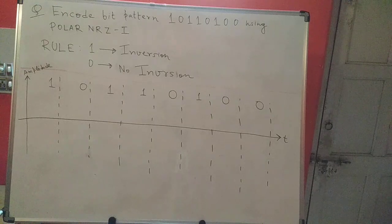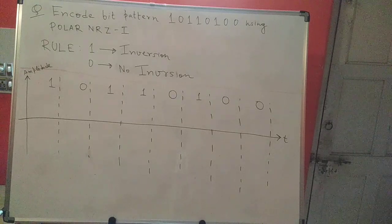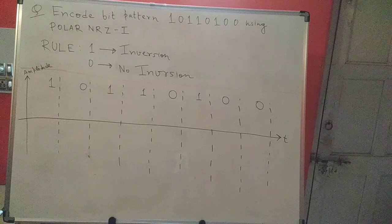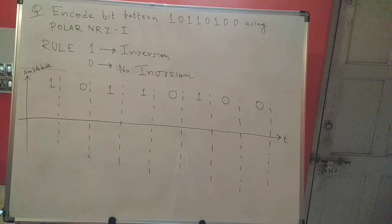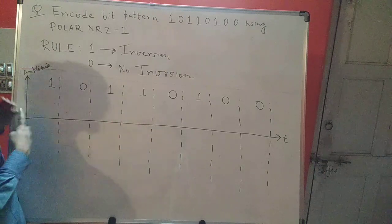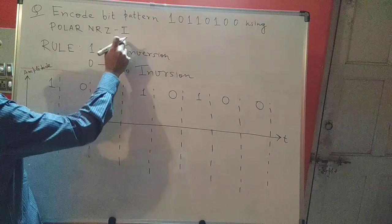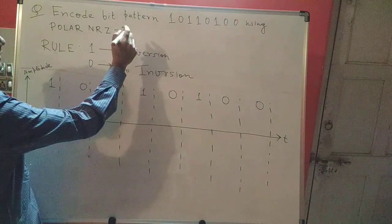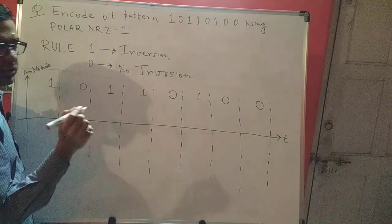In this video we will see how to encode a given bit pattern using Polar NRZ-I. In the last video we saw Polar NRZ-L; here we will see Polar NRZ-I. I stands for inversion.